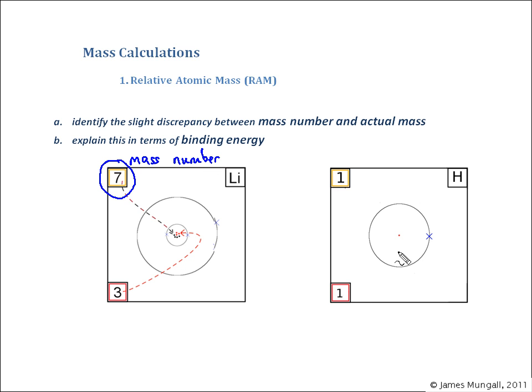Whereas in the case of a hydrogen it's just got one proton and so its mass number is one. Now if we were to compare the actual mass of a lithium with a hydrogen we may well expect that there's a factor of times seven between the two because one's got seven more protons and neutrons than the other.